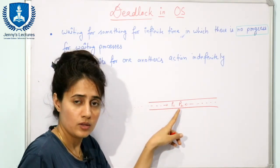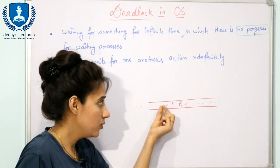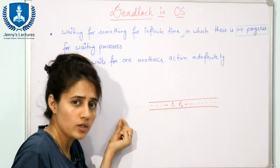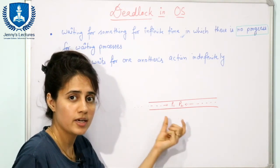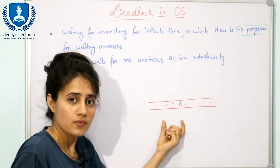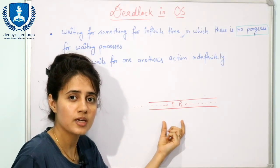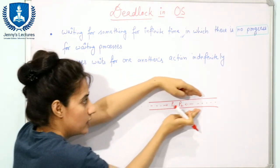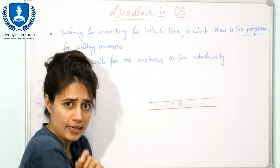Now both persons got blocked. Neither P1 can go nor P2 can go, because they cannot share the street. The street is non-shareable — only one person can use this path at a time.